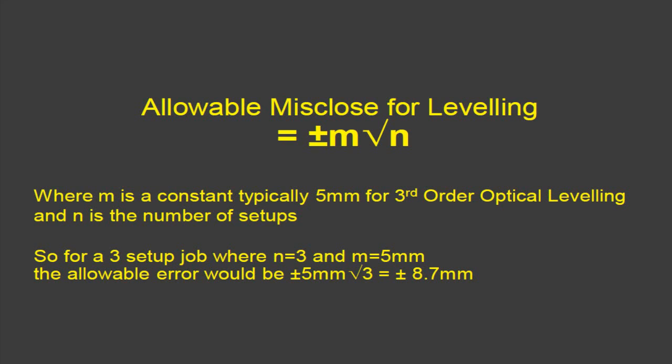root of n. Where m is a constant — it can vary, but generally for third-order optical leveling based on a standard optical level that we would use in a survey class, five millimeters is pretty typical. So m is five millimeters and n is the number of setups.